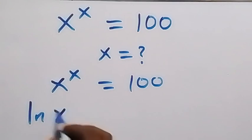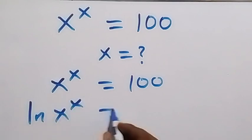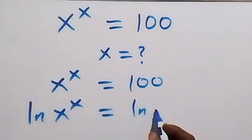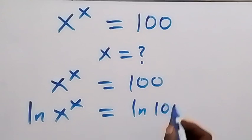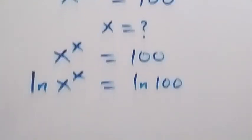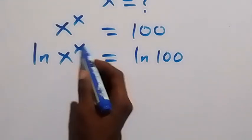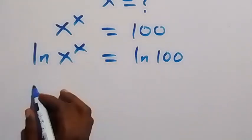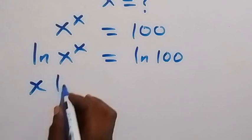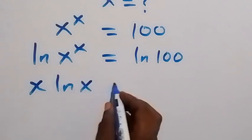ln x raised to power x equals to ln 100. From here, from the law of logarithm, the power of x we take it to the back. Here we have x ln x, which equals to...